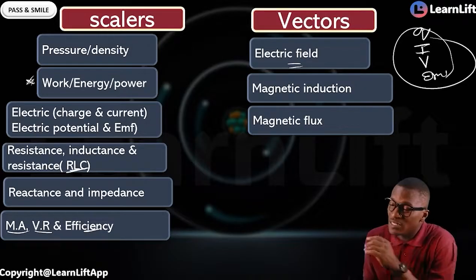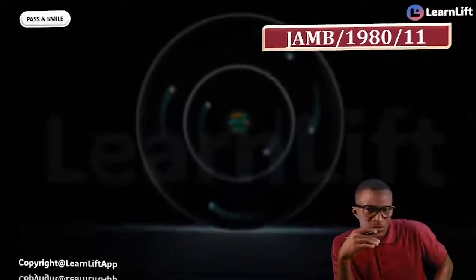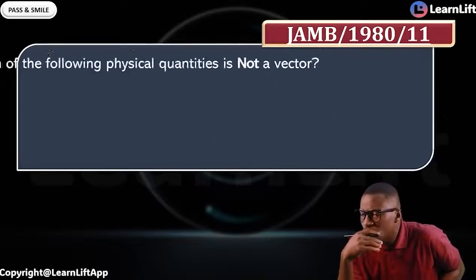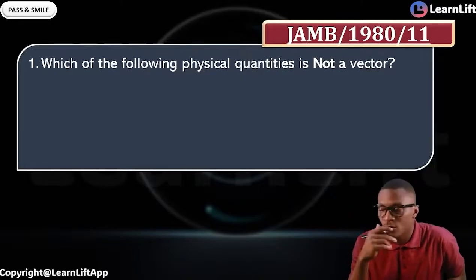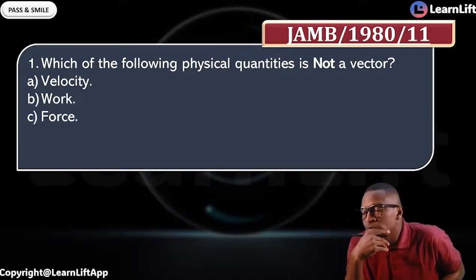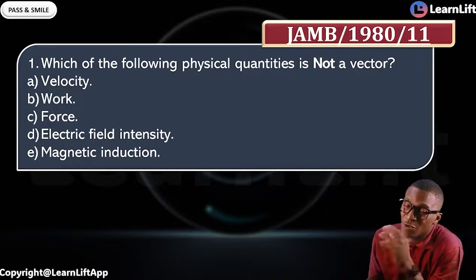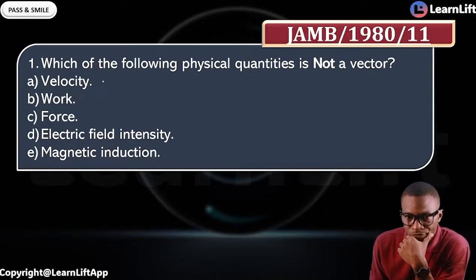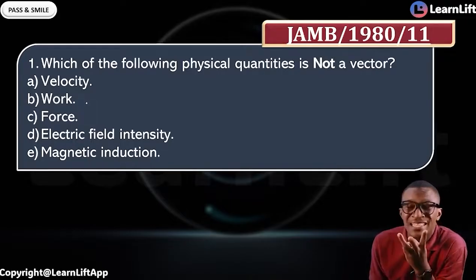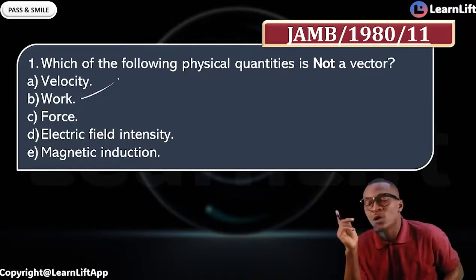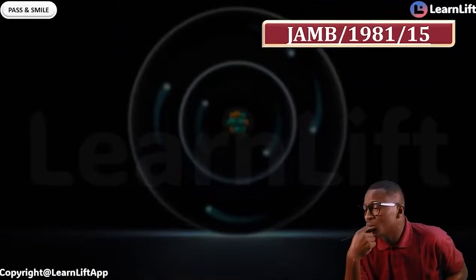Let's start with JAMB 1980. The question says: which of the following quantities is not a vector? Options: A — velocity, B — work, C — force, D — electric field intensity, E — magnetic induction. Check them one by one: velocity is a vector, force is a vector, electric field intensity is a vector, magnetic induction is a vector. But work, energy, and power are scalars — so work is not a vector. Option B is the answer.